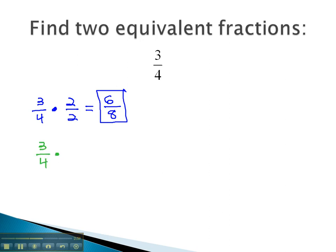We could multiply three-fourths by something else to get a second equivalent fraction, maybe three over three. As long as the top and bottom are the same, we're multiplying by one, so three times three is nine, and four times three is twelve, we get this equivalent fraction, nine-twelfths.